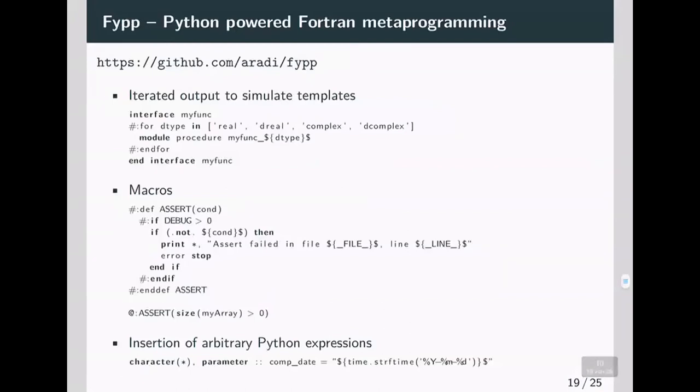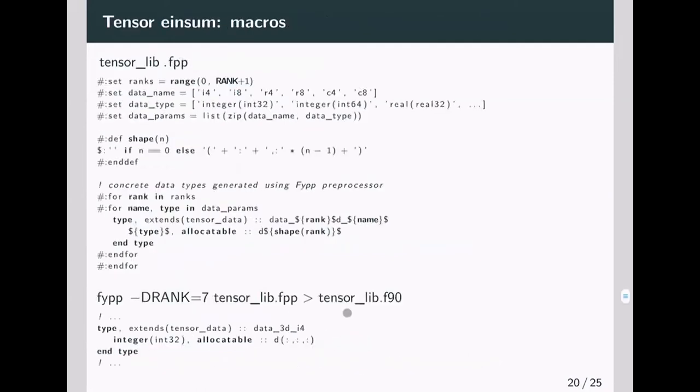Here is a slide on the functionality of the FYPP preprocessor. You have iterated outputs to simulate templates, then you have macros and you can also insert arbitrary Python expressions. These are the macros I defined in FYPP for my tensor code. For instance, I have this shape macro that takes a rank N and then converts it to the Fortran array notation.